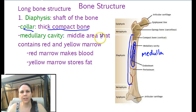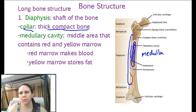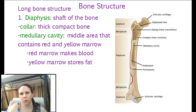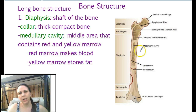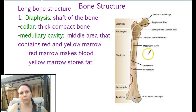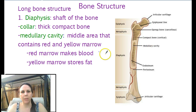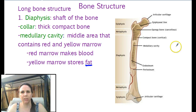This is the middle area that contains red and yellow bone marrow, depending on how old you are. As an infant, and for a little while, this is all red. And then as you get older, this gets filled with yellow fat. So the red marrow makes blood; the yellow marrow just stores fat for us.